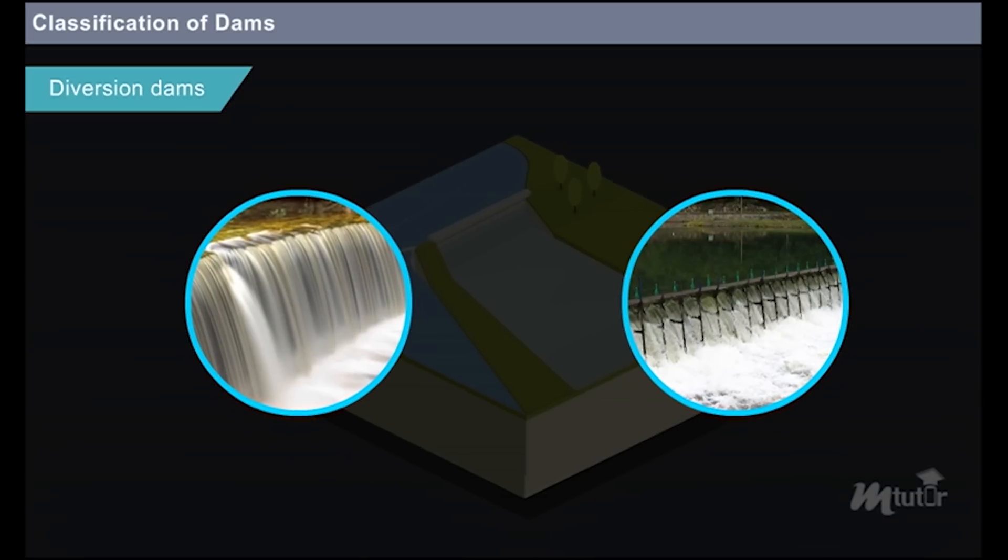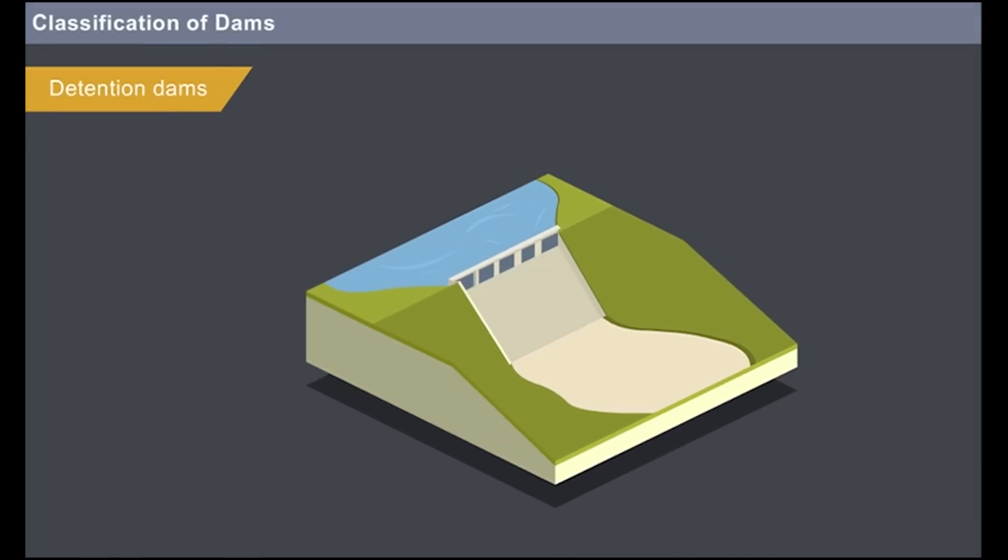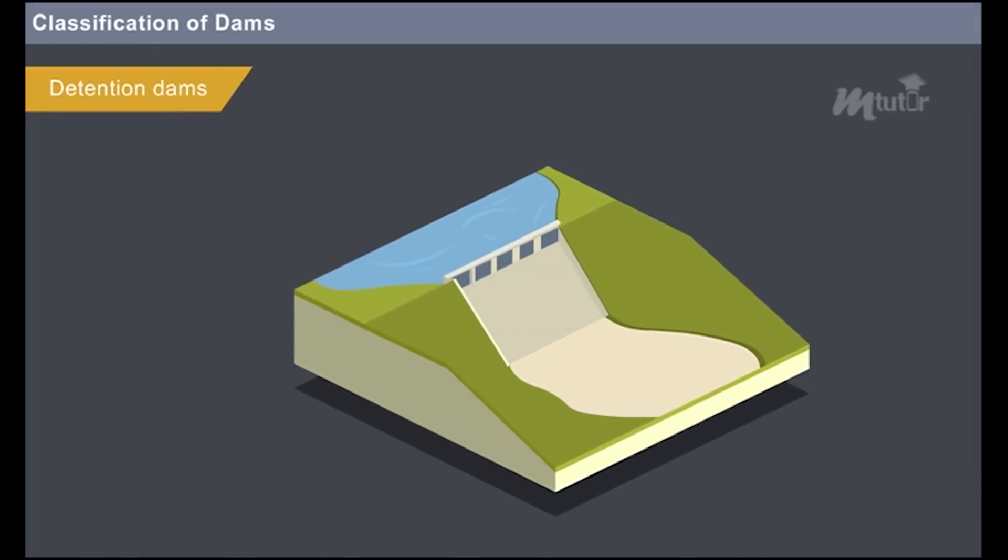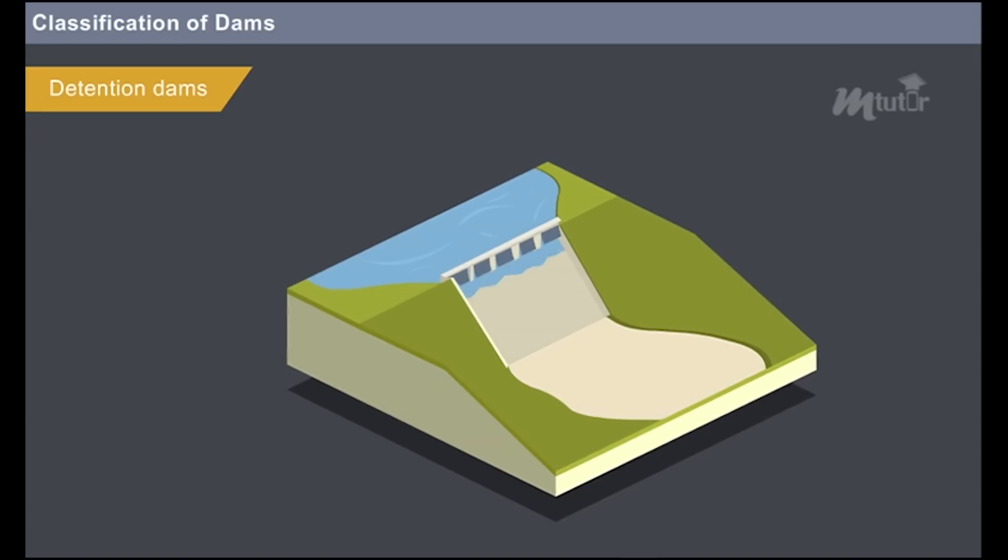Detention dams: These are the dams which are constructed to store water during the time of floods. Later on, the stored water is gradually released at a safe rate without affecting the surrounding regions.